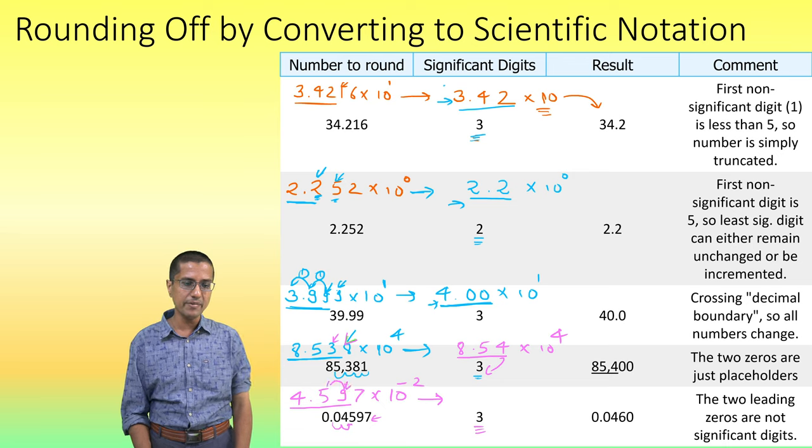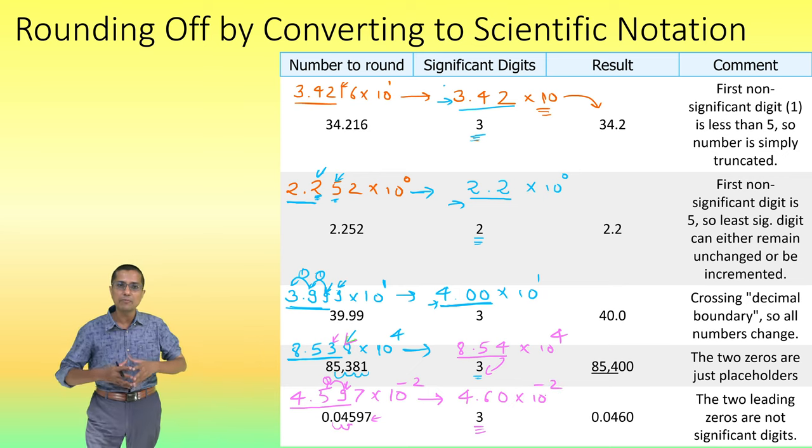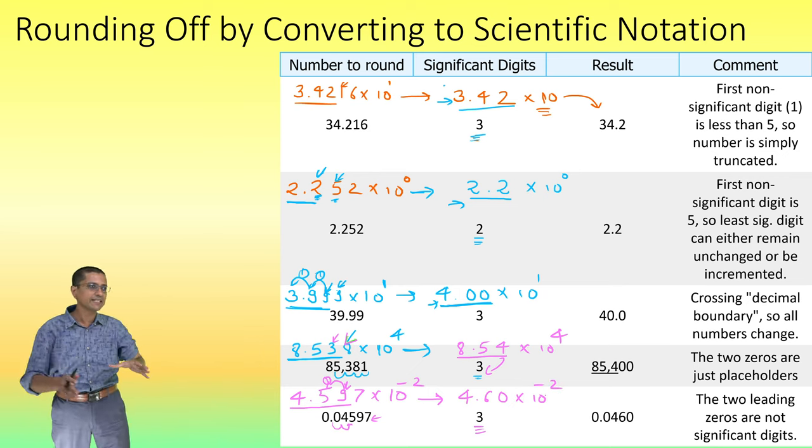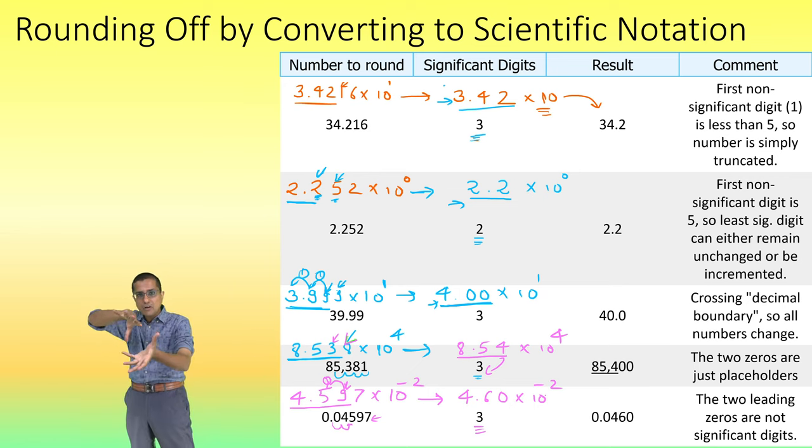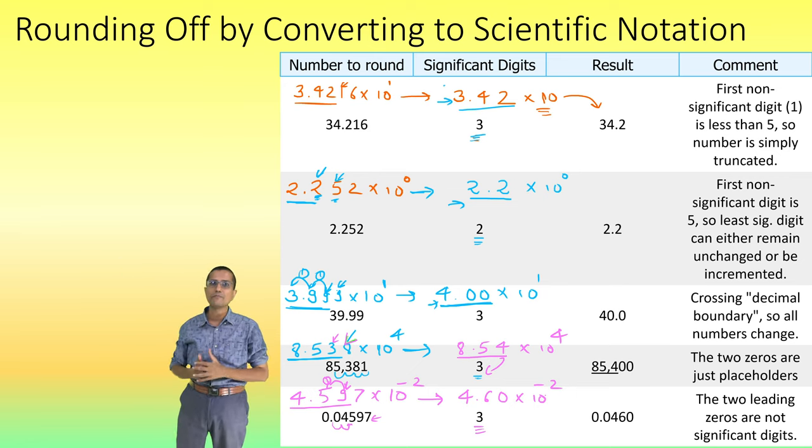When this 9 increments, there is a carry. So, this becomes 4.60 × 10⁻². Very, very simply, we were able to find the answer. And this is our preferred technique. We will always convert the number to the scientific notation. On the scientific notation, we will do the rounding.